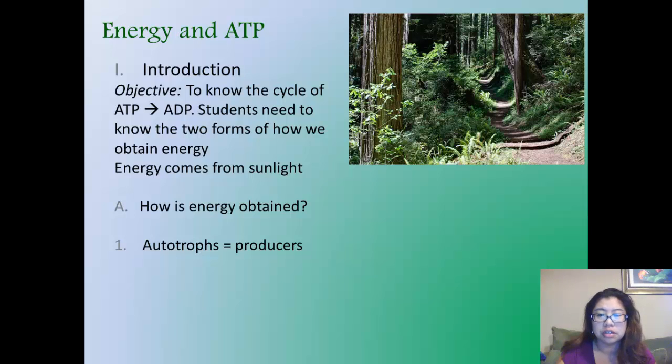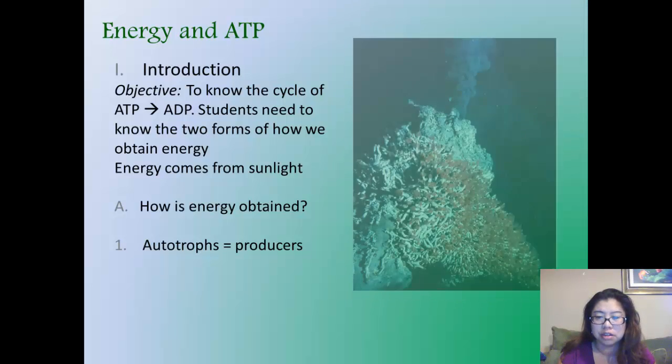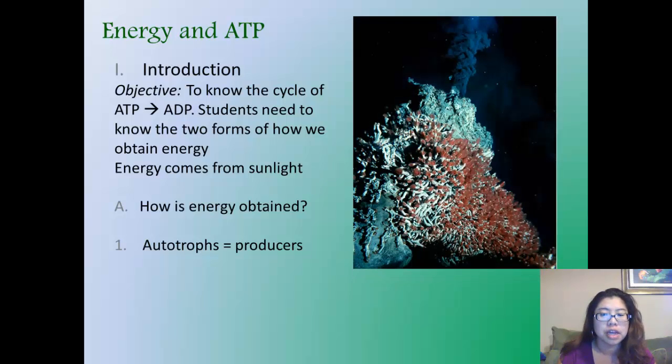But there is another type of autotrophs that also do it through chemosynthesis, which organisms take energy from chemicals. They're usually in places where they're dark and cold, where there is no option of getting energy from the sun. They have to do it through chemicals.